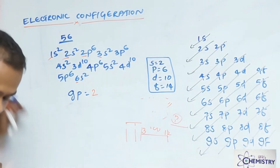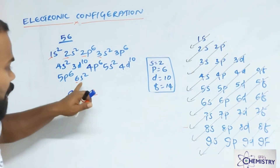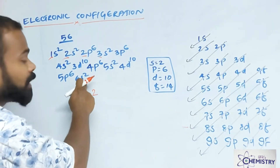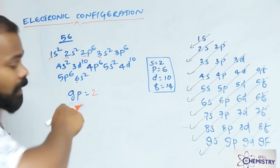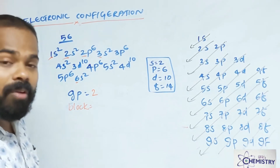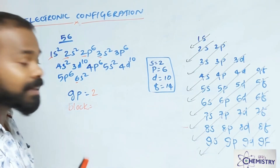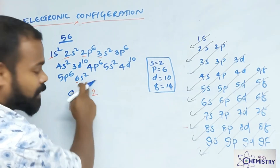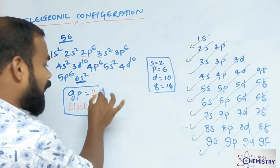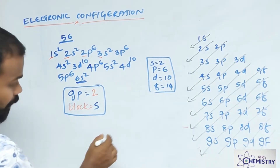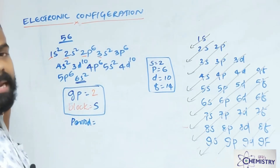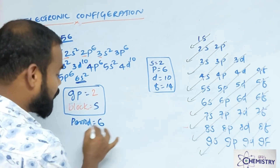Here group equals 2. The biggest principal quantum number is 6, and s is the last shell. So however many electrons are in s — that is the group number. Group = 2. For block: where the last electrons are filled — here the last electron is filled in s, therefore it is an s-block element. For period: the biggest principal quantum number is 6, therefore it is a sixth period element.